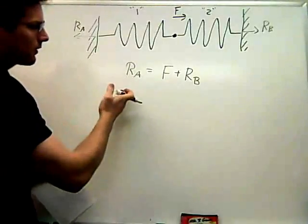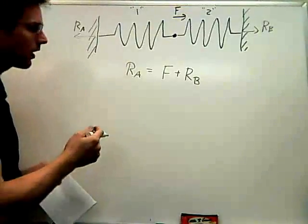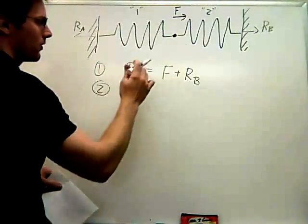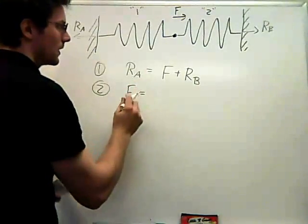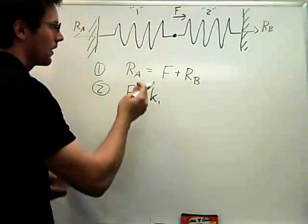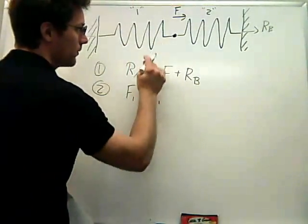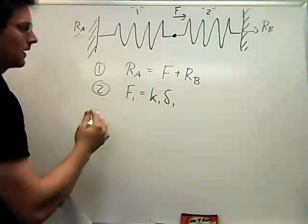And F is some force that we apply, so we know F, but we have one equation in two unknowns here. Well, what else do we have? We have Hook's law for both of these springs.